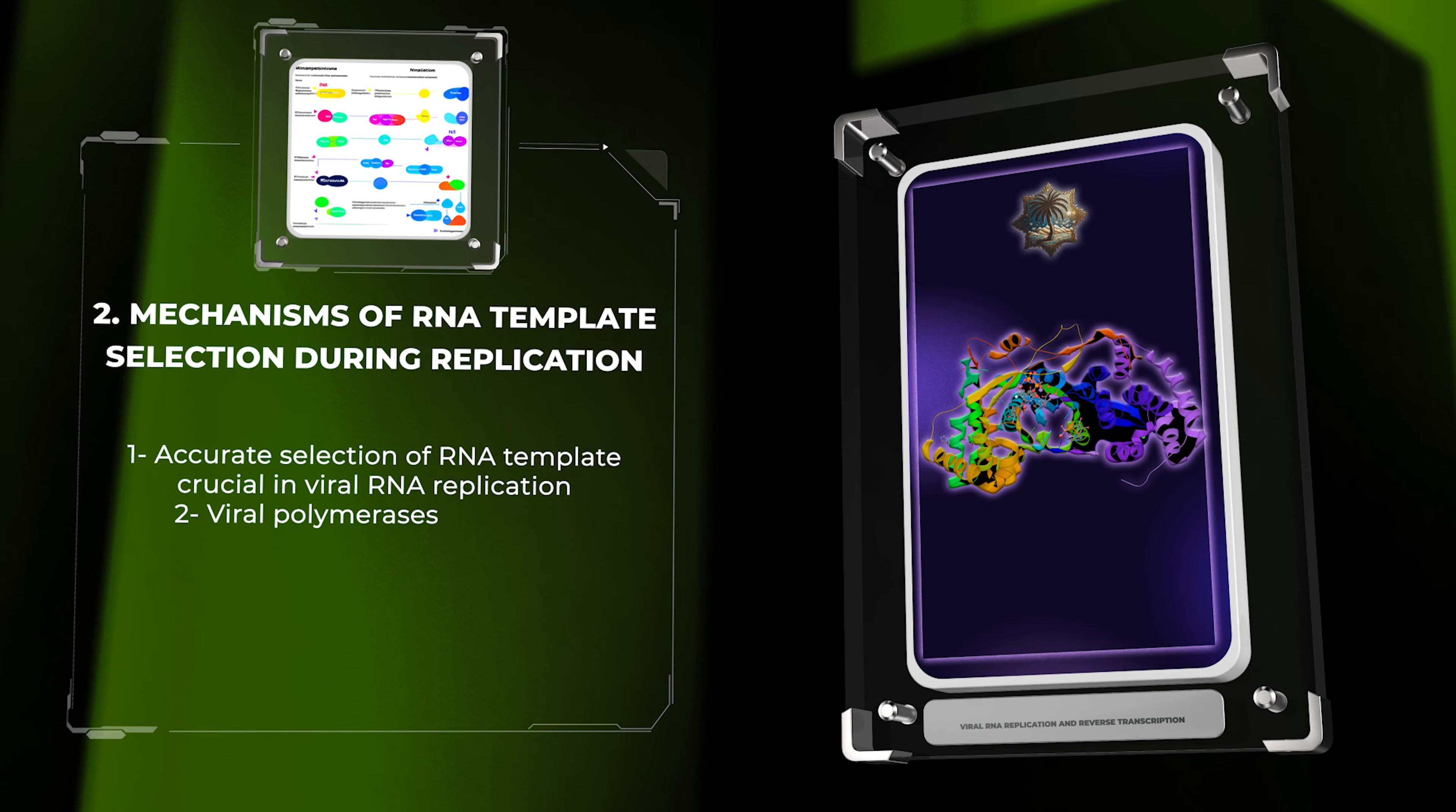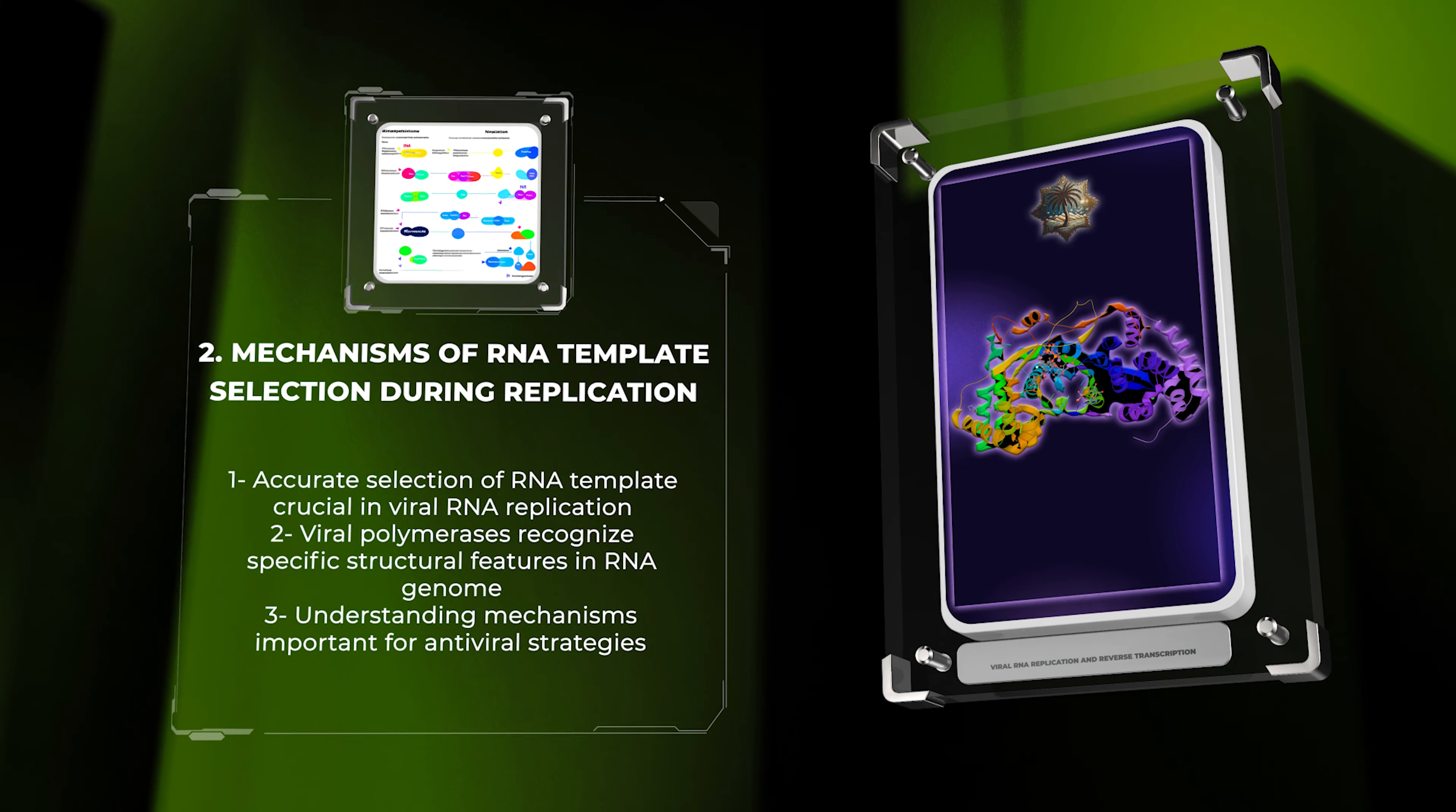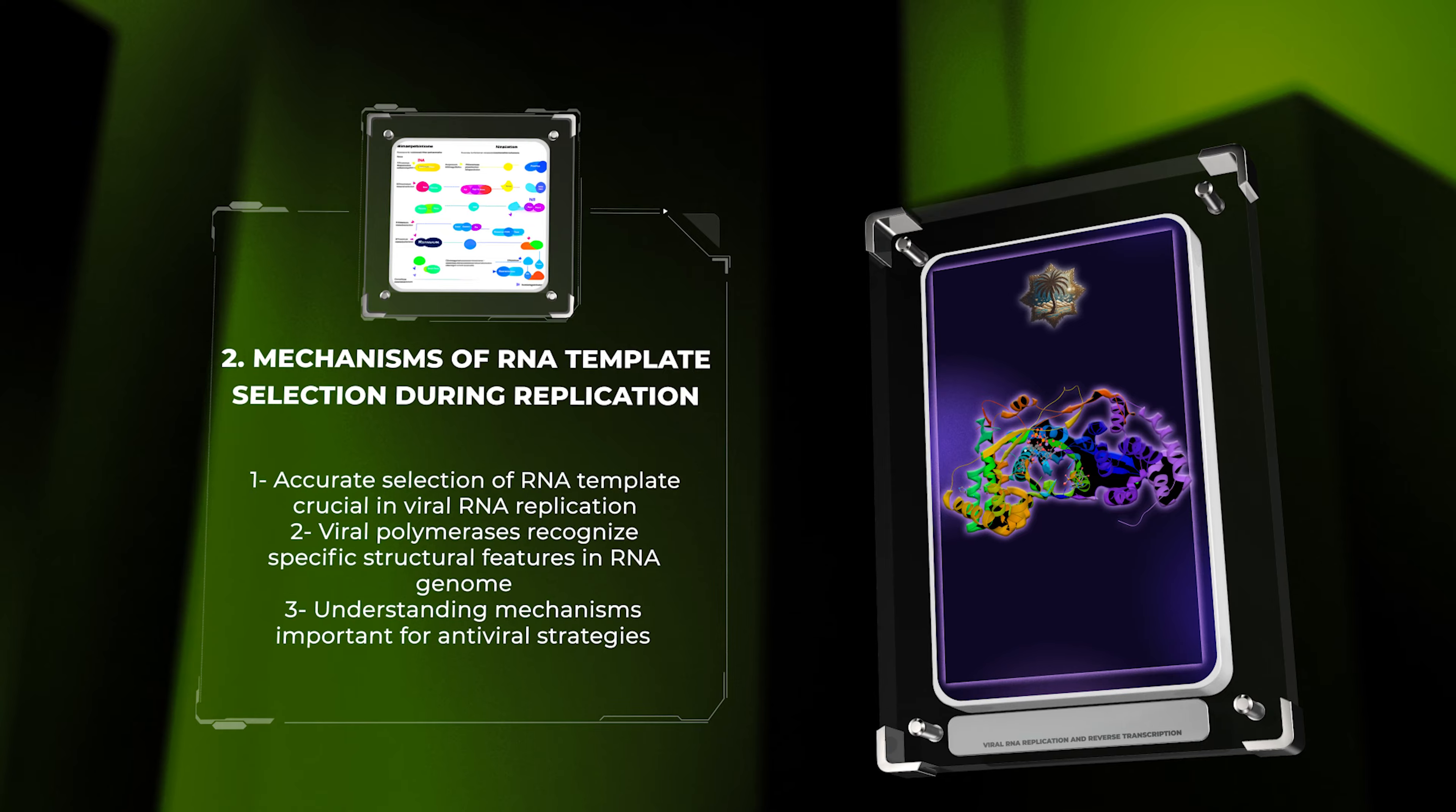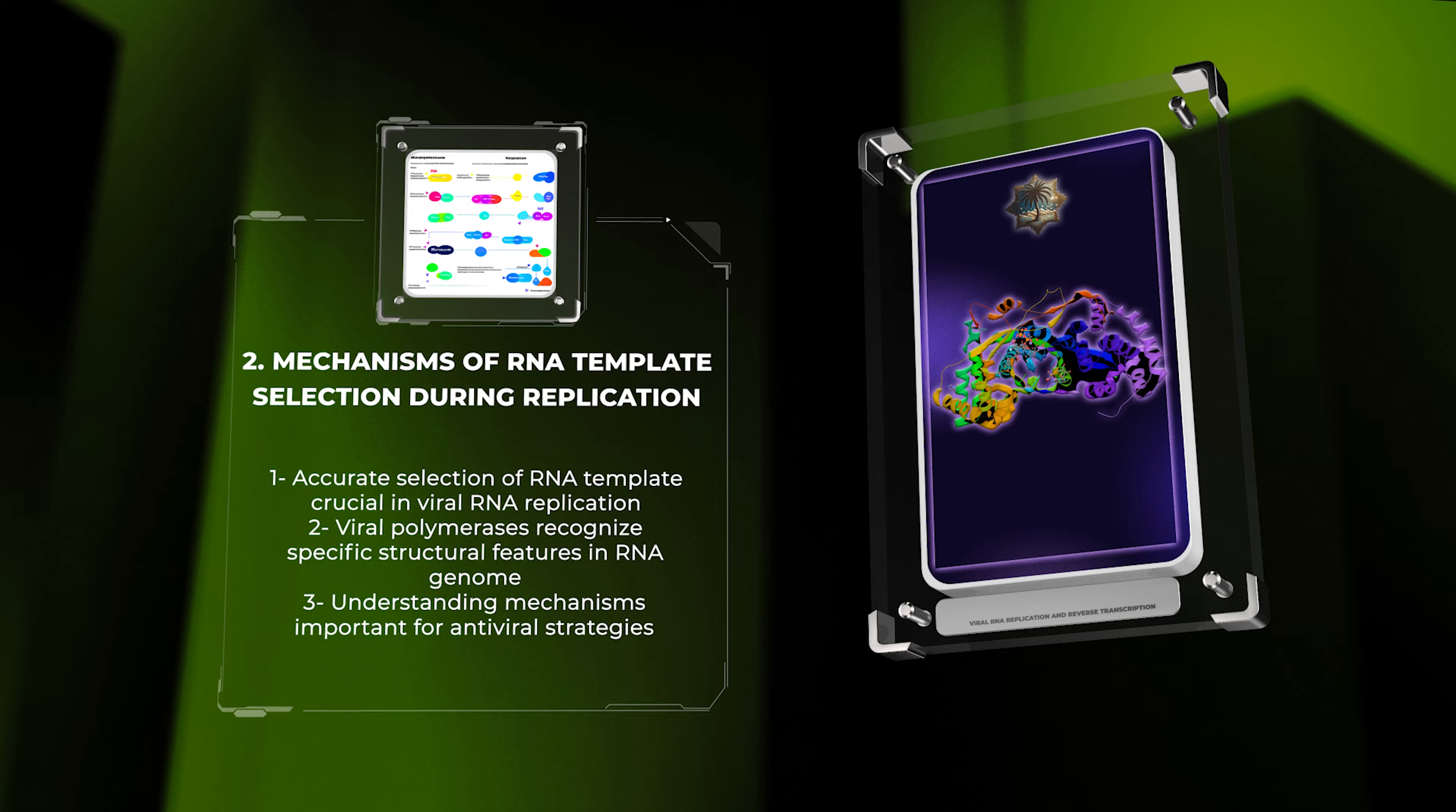In viral RNA replication, the accurate selection of the right RNA template is crucial. Viral polymerases recognize specific structural features in the RNA genome to facilitate this process. Understanding these mechanisms is important for antiviral strategies.